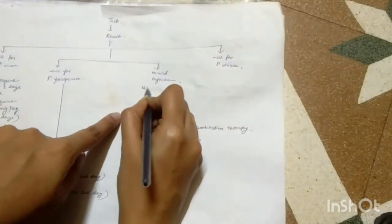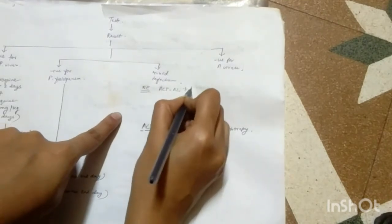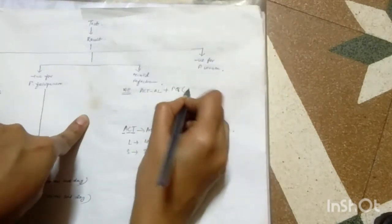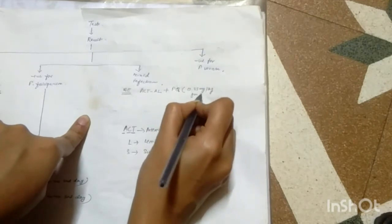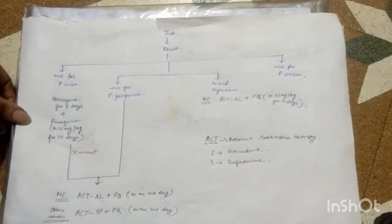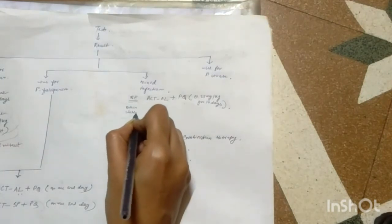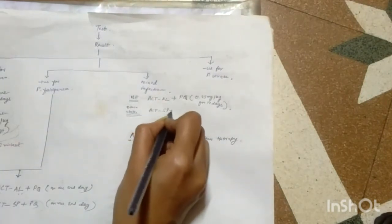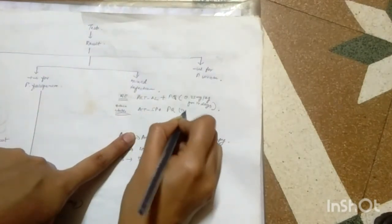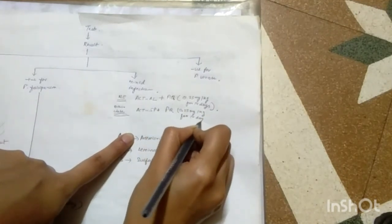If there is a case of mixed infection, then for northeastern states you have ACTAL plus primaquine 0.25 milligram per kg for 14 days. For other states, you have ACTSP plus primaquine 0.25 milligram per kg for 14 days.